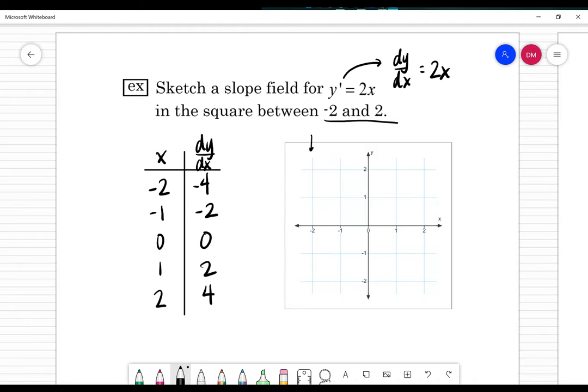I'm going to start at this x value of negative 2, along this vertical line here that I have in my graph, and I'm going to draw what appears to be a pretty steep slope of negative 4. I'm going to try and do a bunch of others that look like that. When I get to this vertical line of x equals negative 1, I got a slope of negative 2, so I'm going to do one that's slightly less steep.